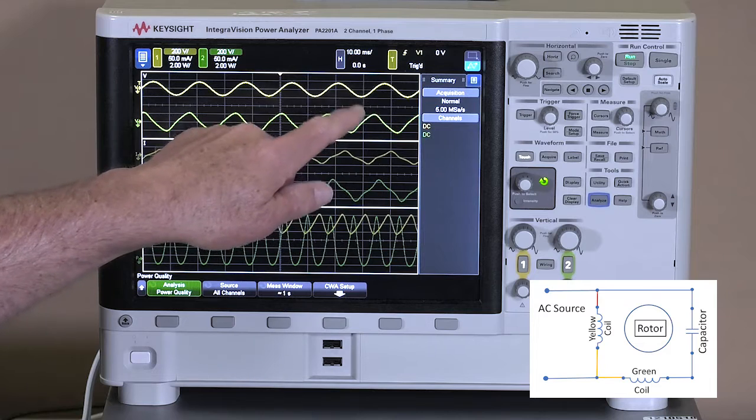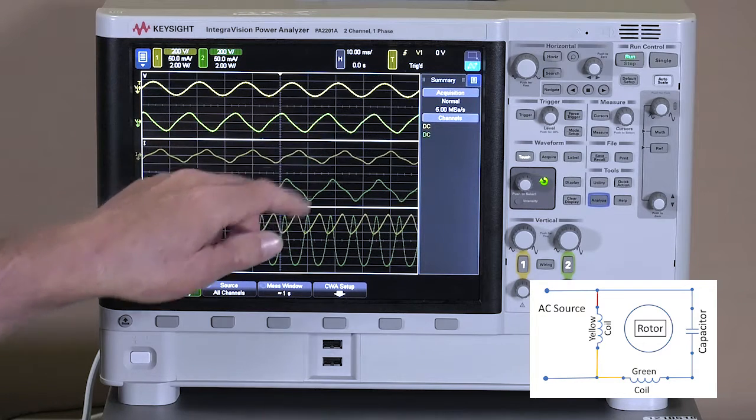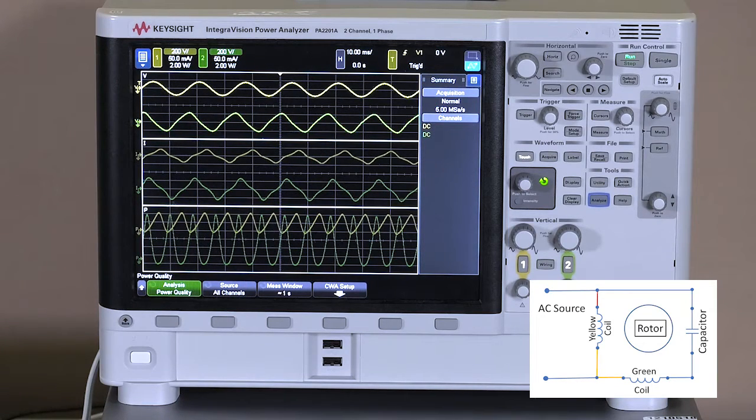So the motor fields are always changing, and that's what causes an AC synchronous motor to work. It relies solely on the AC fields causing a change in the magnetic fields, and the rotor of the motor is chasing those magnetic fields.